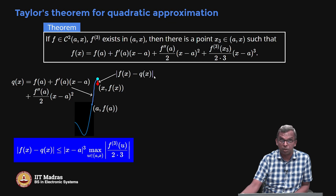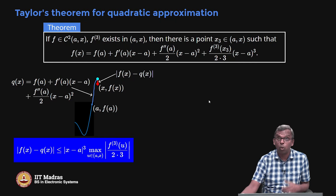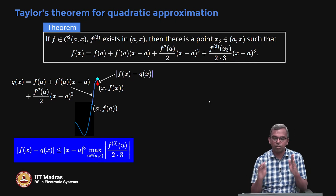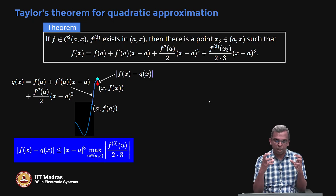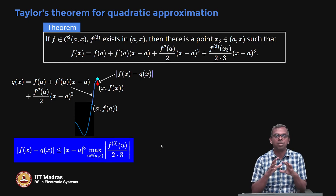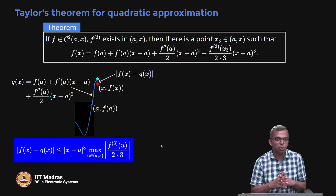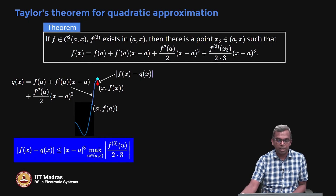What is the error? The absolute value of F of x minus Q of x — Taylor's theorem tells me that mod F of x minus Q of x is less than or equal to mod (x minus A) to the power 3. Notice if x and A are very similar, x cubed is even smaller than x squared and x. So I am getting better and better bounds on the error. But remember, there is a multiplication factor with F3 of u divided by 6, so my third derivative should be well behaved. If that is well behaved, I can bound this error, and the maximum of u in (A,x) gives a wonderful bound.